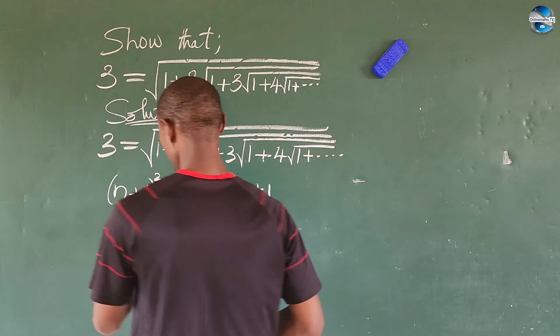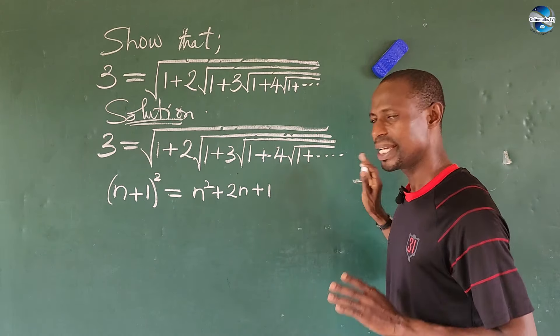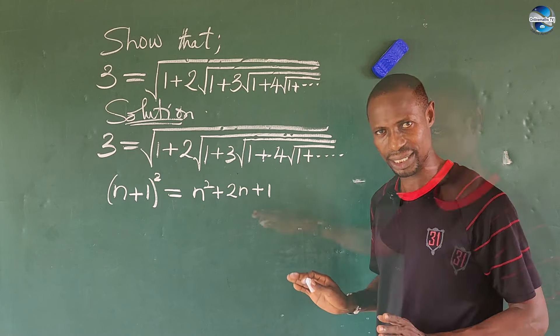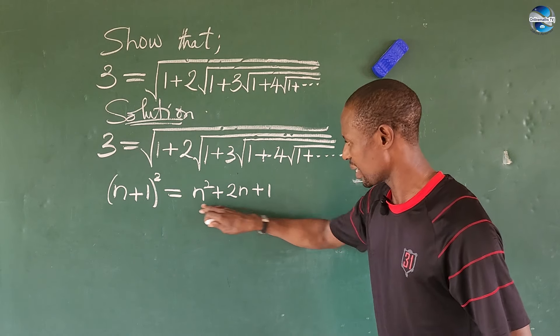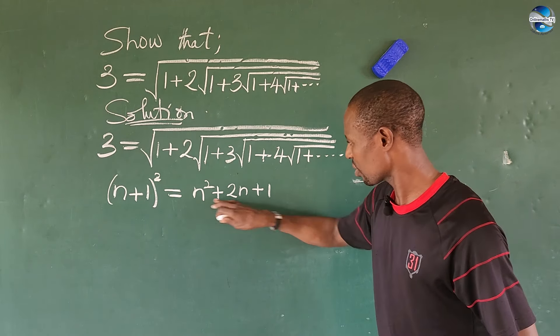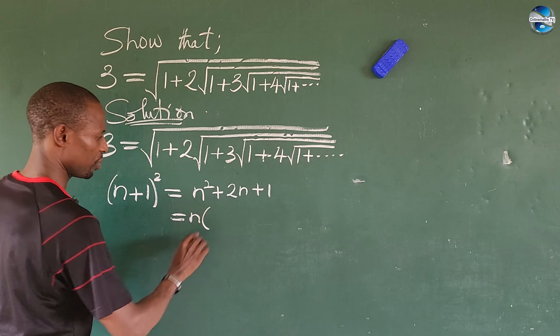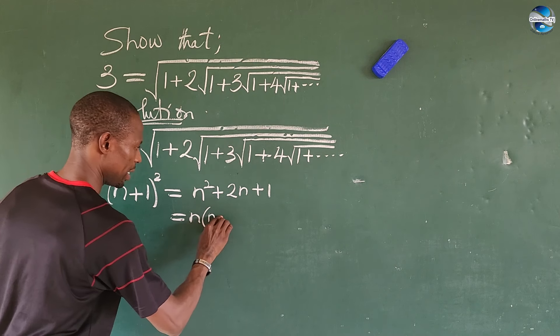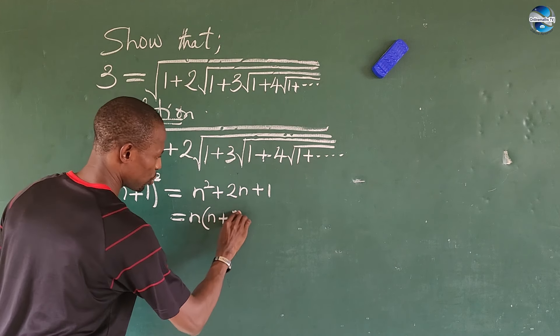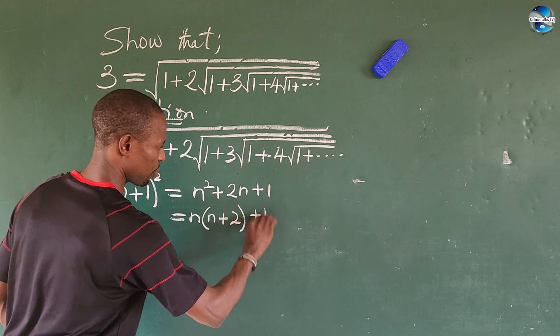Now, where n is a set of positive integers. What is common in n² and 2n is n, so I can factor out n from here. So if I factor out n, I'm going to have n(n+2) plus 1.